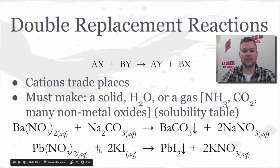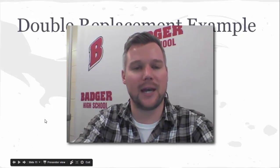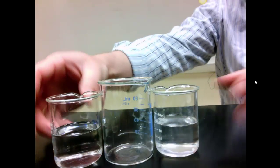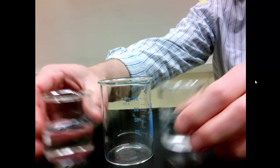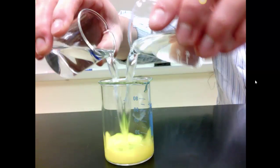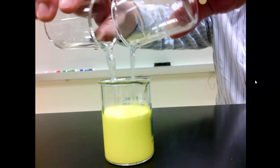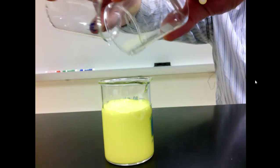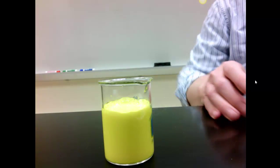In the demonstration, we mix lead(II) nitrate with potassium iodide — two clear and colorless liquids — to make a yellow precipitate. That precipitate forming is what causes the double replacement reaction to go to completion.